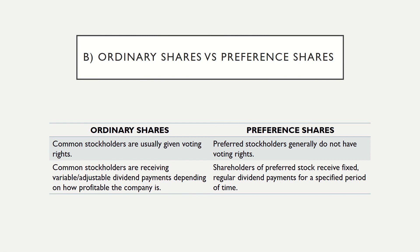For Question B, you need to identify two differences between ordinary shares and preference shares. Ordinary shares (common stock): common stockholders are usually given voting rights and receive variable or adjustable dividend payments depending on how profitable the company is. Preference shares: shareholders normally do not have voting rights, and they receive fixed regular dividend payments for a specified period of time.